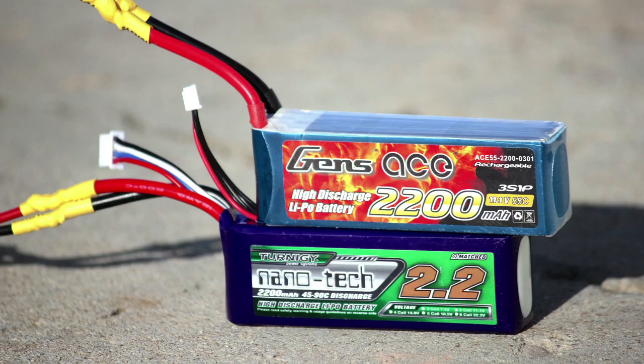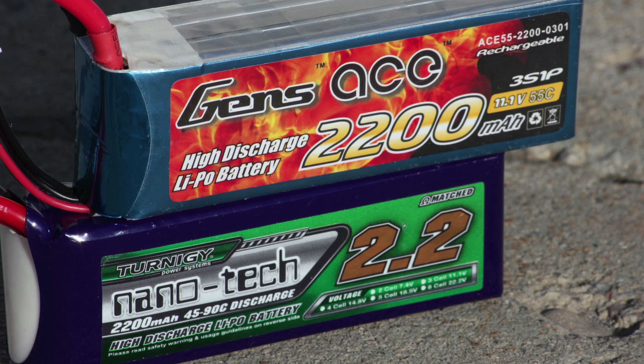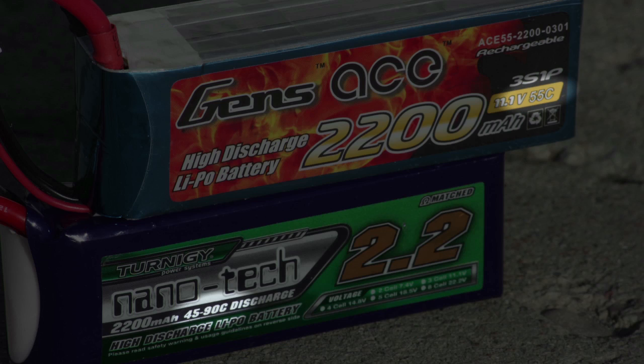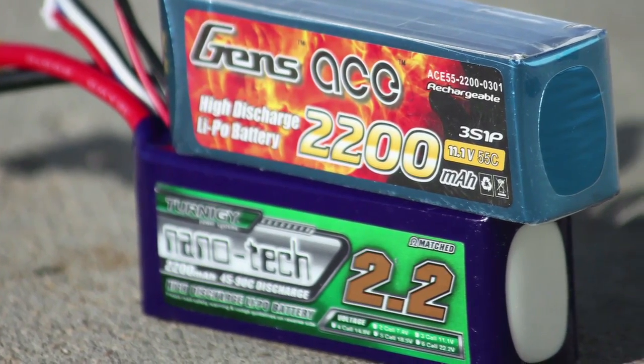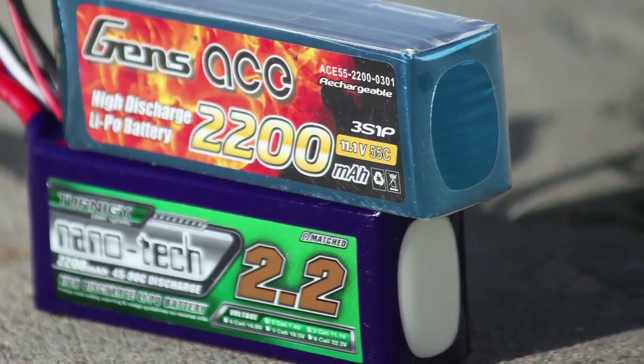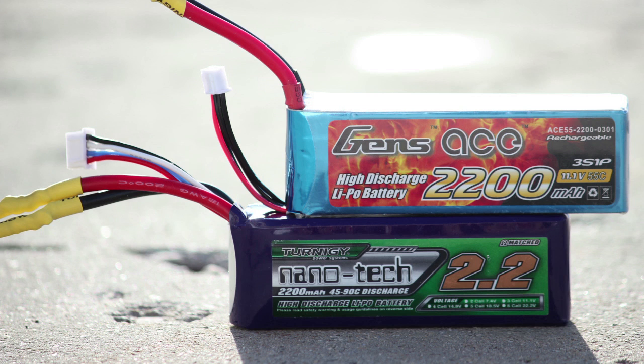After the tests the Gens Ace did come out on top but that was expected because the Nanotechs were 10c's less. However, the fact that these results were so close especially in the beginning kind of leads me to believe that the Gens Ace batteries are overrated. I'm guessing they're 50c not 55c and I'm kind of thinking this because it doesn't make any sense that the Nanotechs would be underrated, so I'm guessing the Gens are overrated.